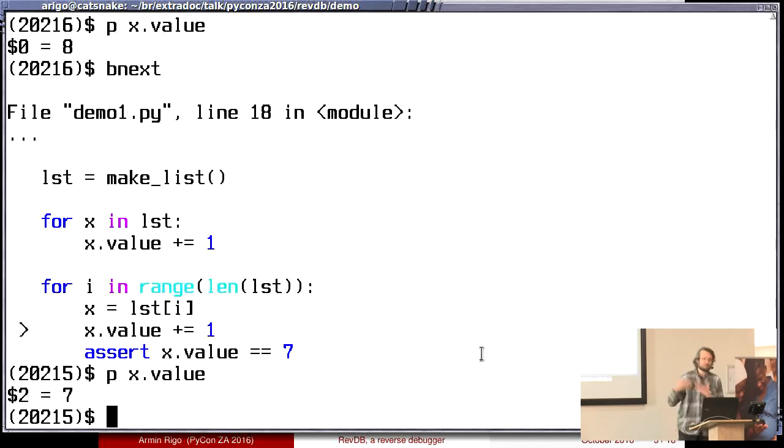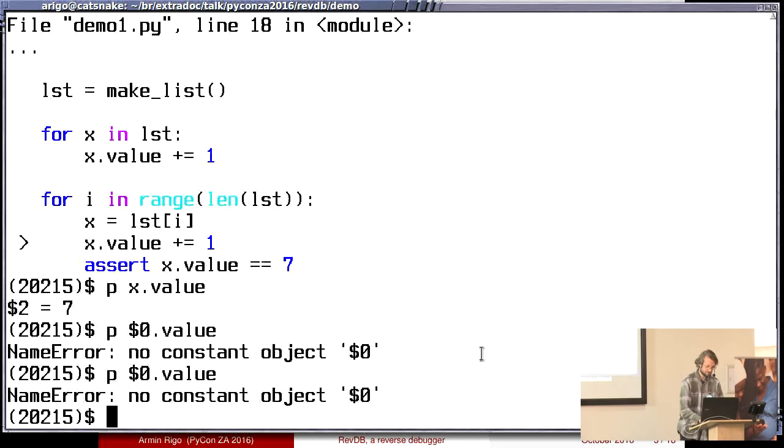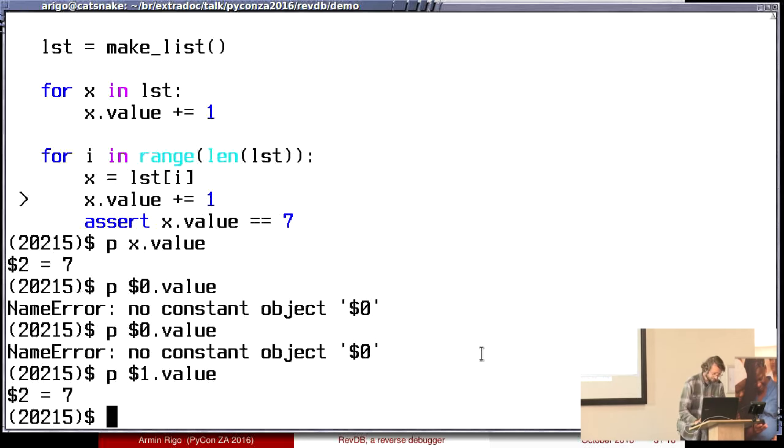Now the question. Now we are trying to really debug this thing. x.value ends up being 8. It means it has been incremented 3 times that we expected 2 only. So where was it incremented? My $1 refers to the same object as before, even though I'm at a different time. So now $1.value is 7. But more interesting, I can watch it.